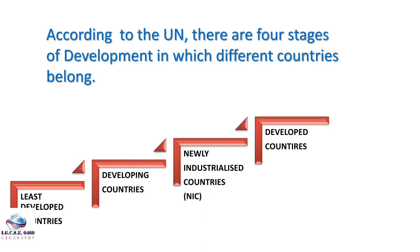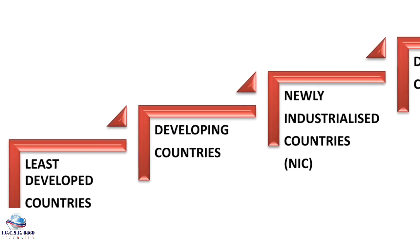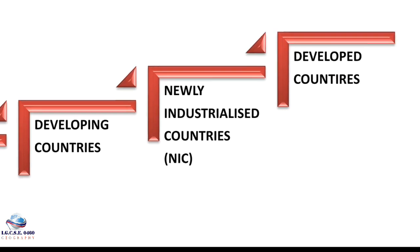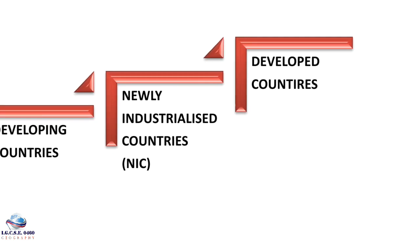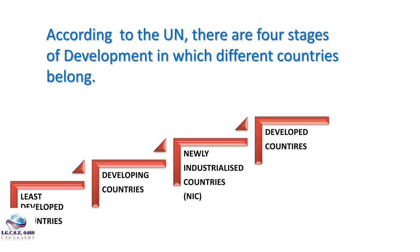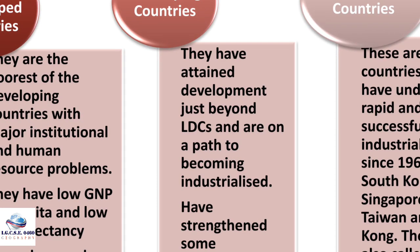According to the UN, there are four stages of development into which different countries fall. Stage one is least developed countries; stage two is developing countries; stage three is newly industrialized countries (NIC); and stage four is developed countries. Let's look at the descriptions of each of these stages.